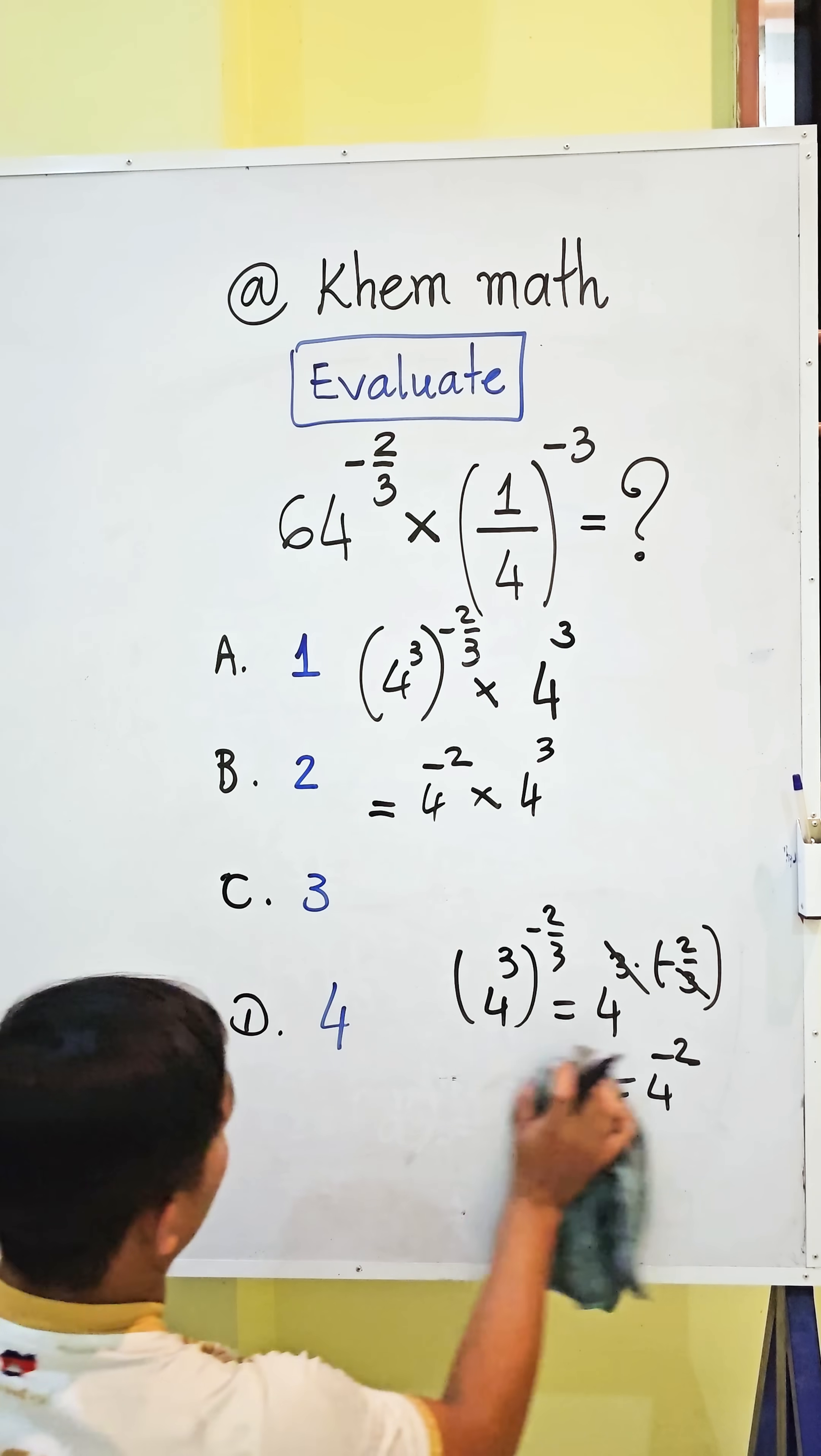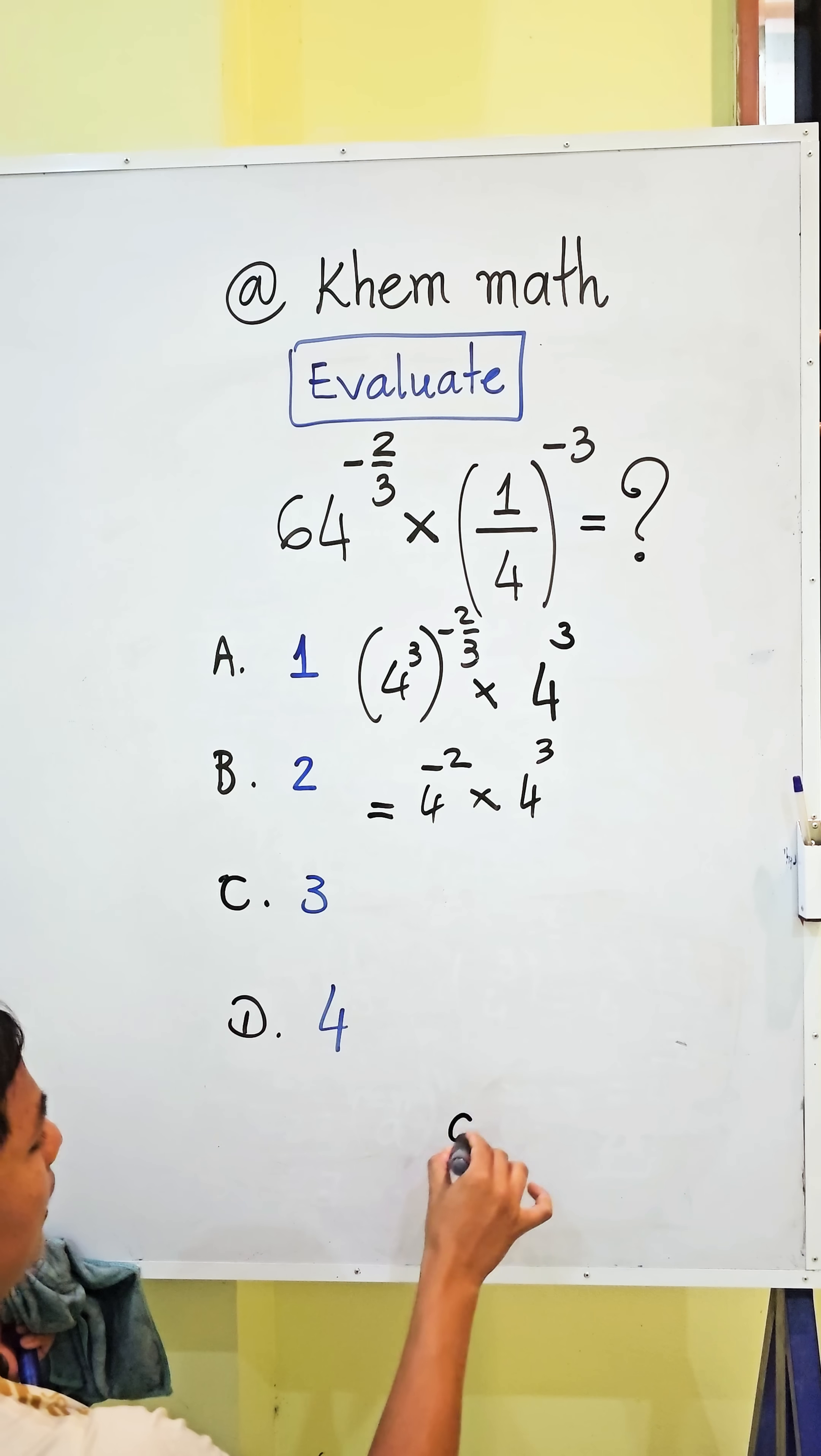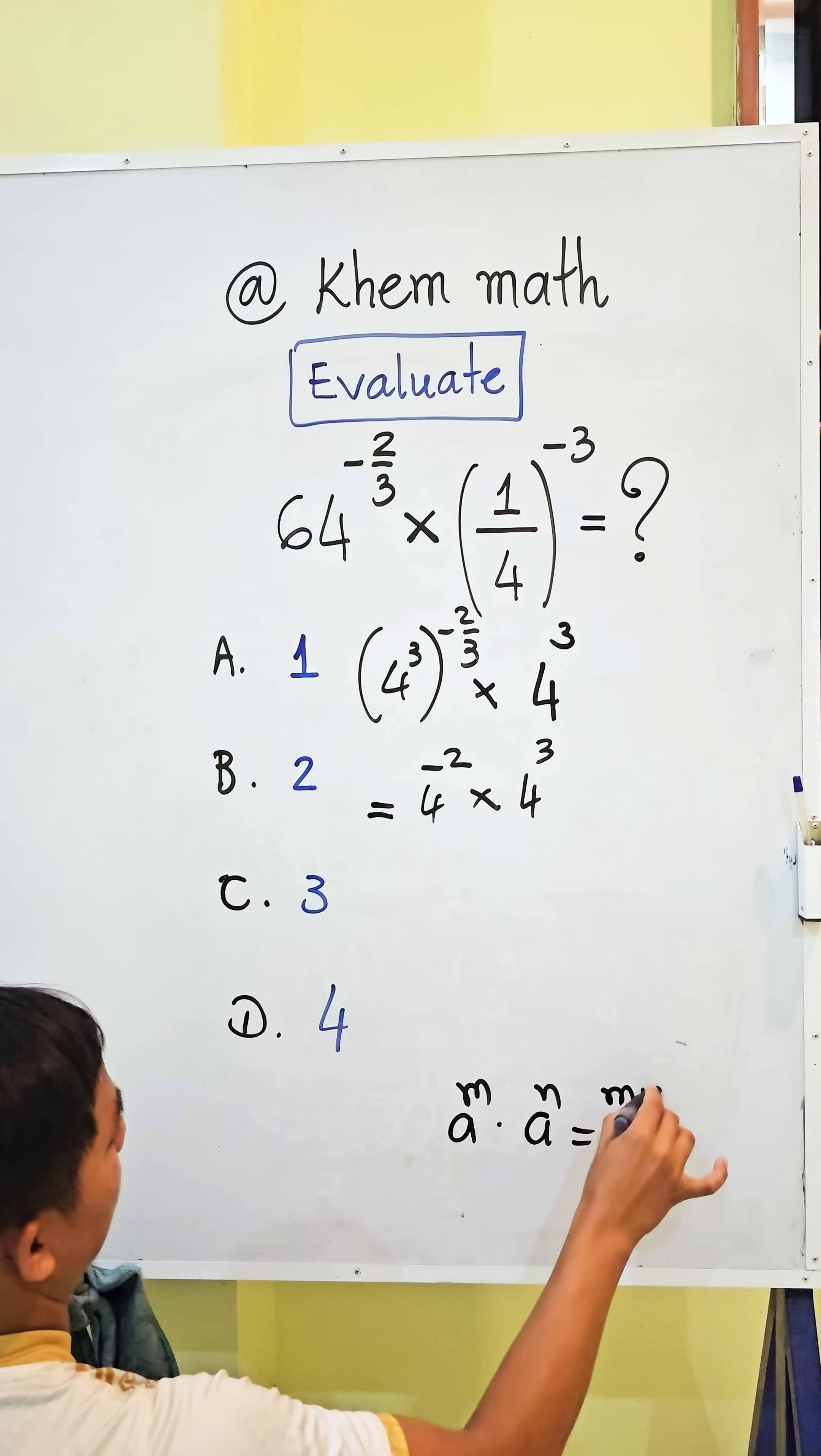And then, look, here we use the formula A power M times A power N equals A power M plus N.